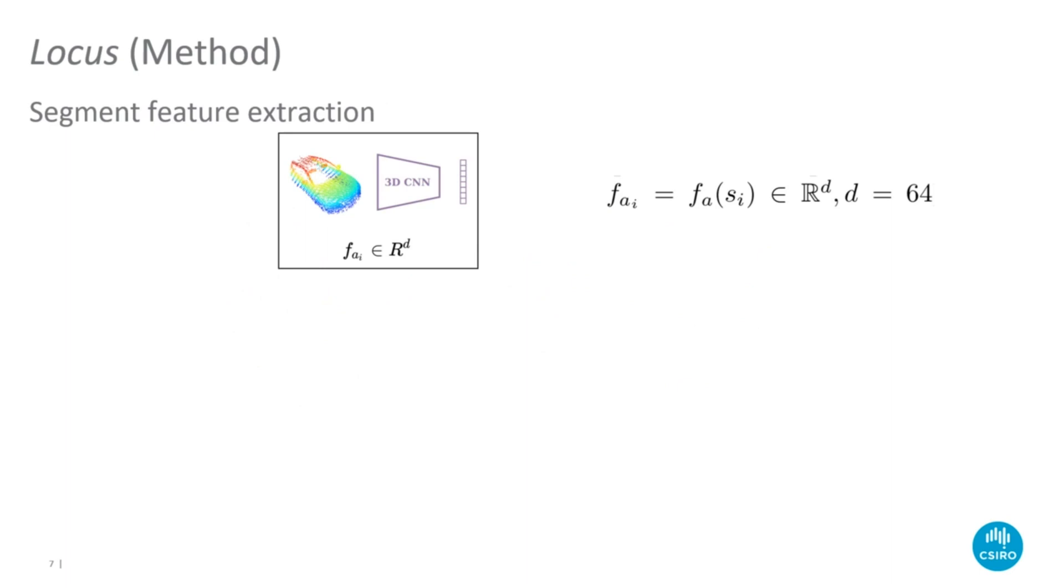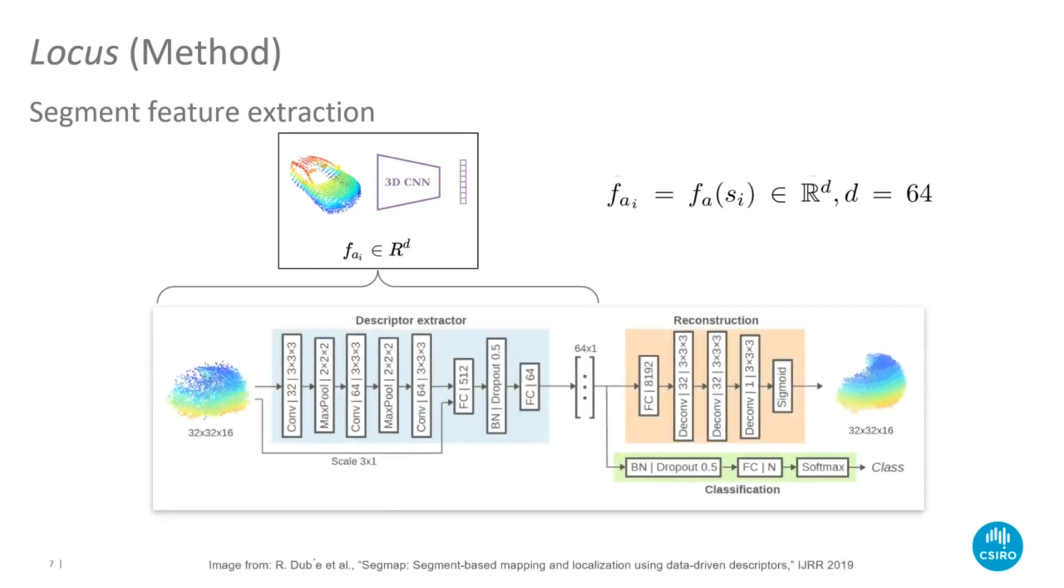The first segment feature, noted as FA, is obtained using a 3D CNN. For this, we use the pre-trained network provided by the authors of SegMap. This network encodes each segment into a 64-dimensional vector which is capable of discriminating segments based on the structural appearance while also being invariant to viewpoint.